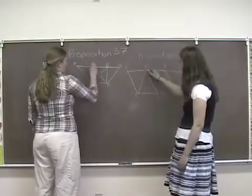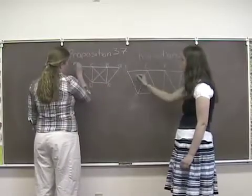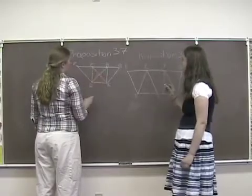Moreover, the triangle CDK is half the parallelogram FDAC, for the diameter DC bisects it.